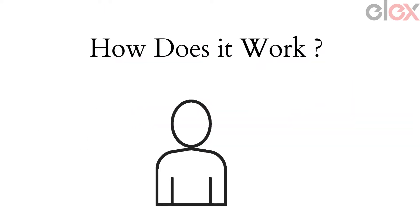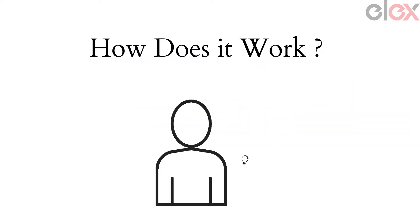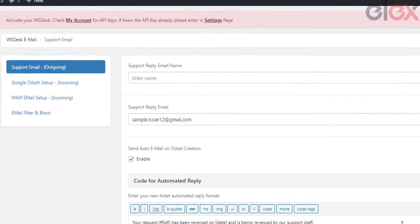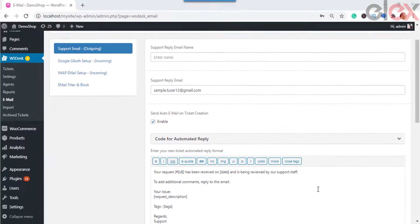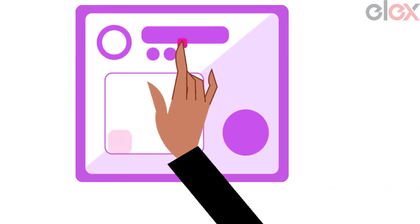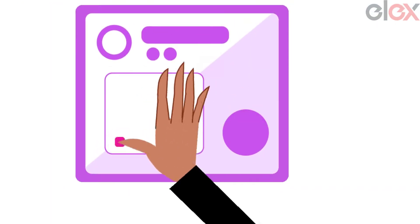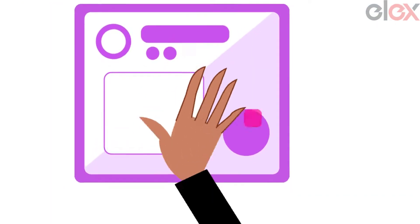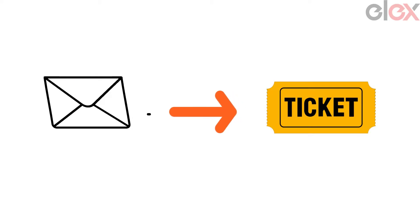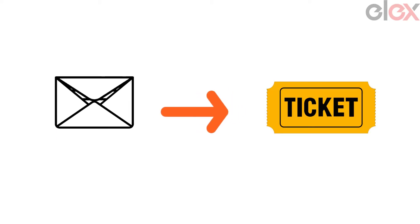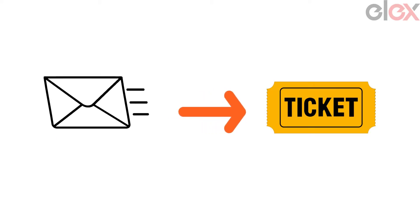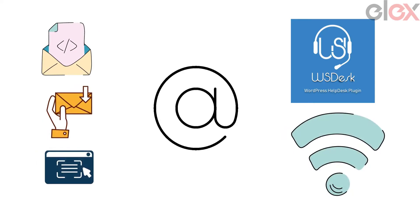How does it work? This conversion process of emails into tickets happens when you configure the required email ID into the plugin. That is, if a customer enters a specific email ID as the "to" address for sending the email, it should be converted into a ticket. This means any possible address entered by the customers to send an email to you needs to be converted into tickets.